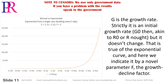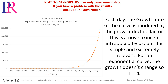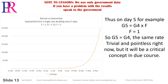Strictly, G is an initial growth rate — G0, then akin to R0. But it doesn't change. That is true of the exponential curve, and here we indicate it by a novel parameter, F: the growth decline factor. Each day, the growth rate of the curve is modified by the growth decline factor. This is a novel concept introduced by us, but is simple and extremely relevant. For an exponential curve, the growth doesn't change, so F equals 1. Thus on day 5, for example, G5 equals G4 times F, where F equals 1. So G5 equals G4 — the same rate. It's not trivial and pointless right now, but it will be a critical concept in due course.